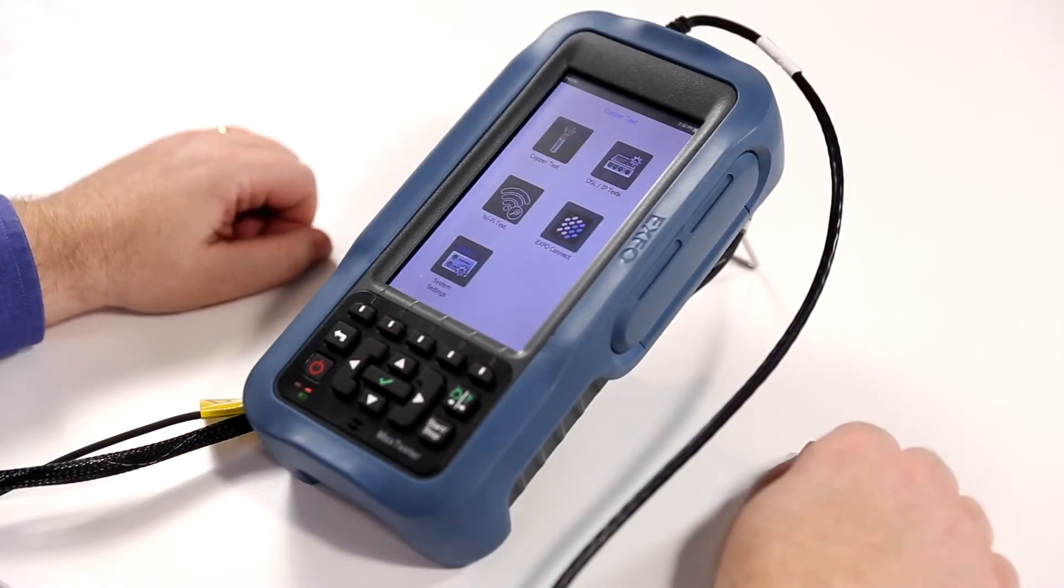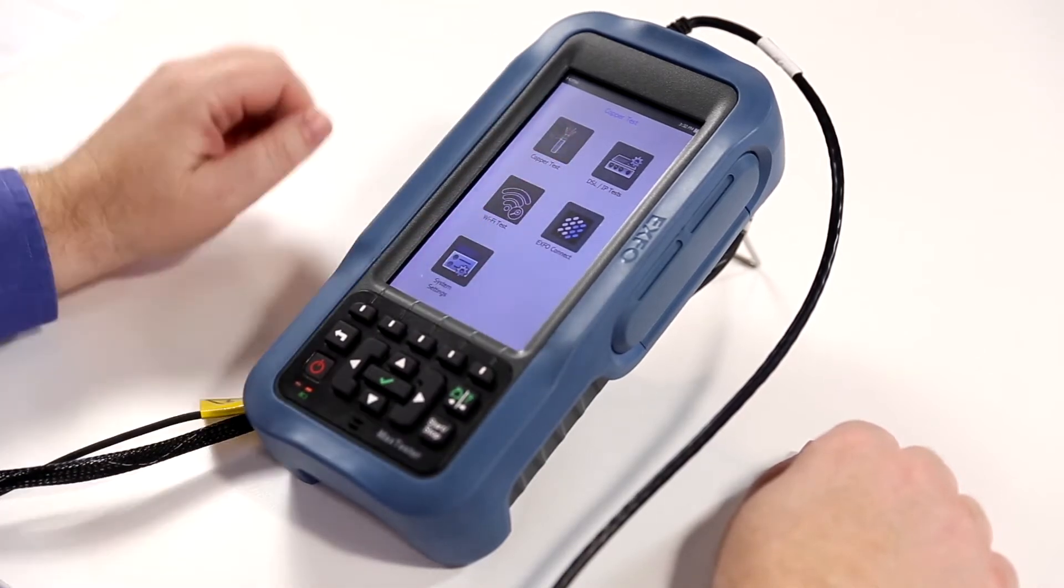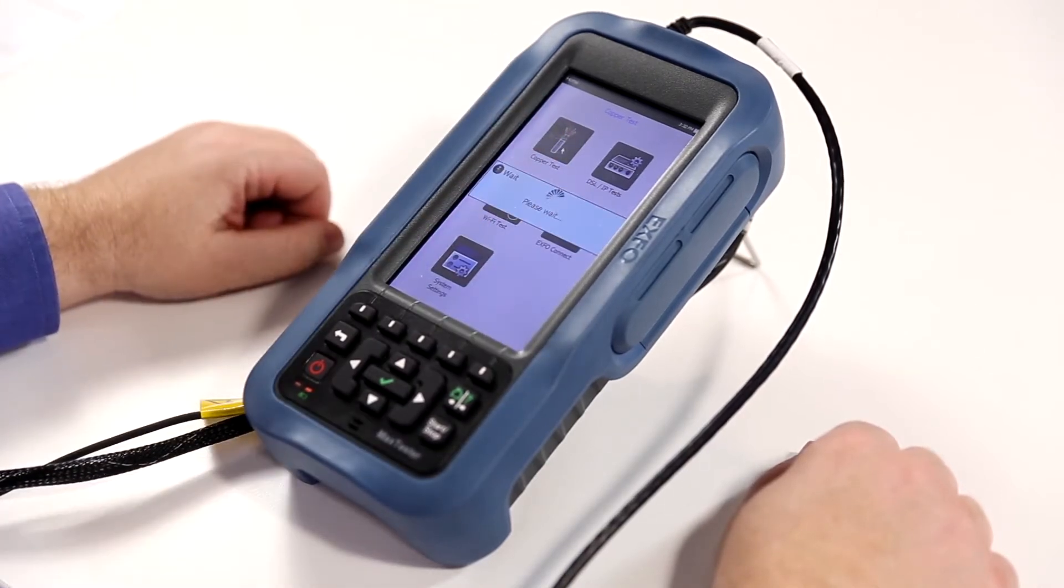This is a demonstration of the Time Domain Reflectometry or TDR test on the MAC 635G. By selecting the copper test icon on the MAC 635G home menu, we will then be able to access the TDR capability.